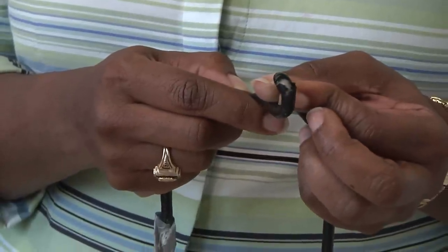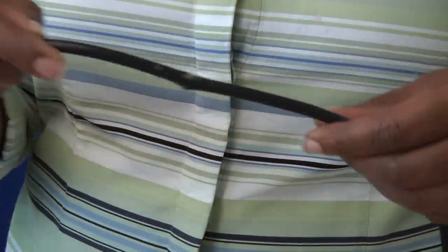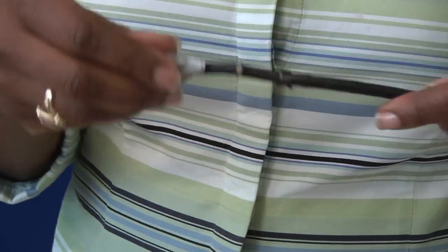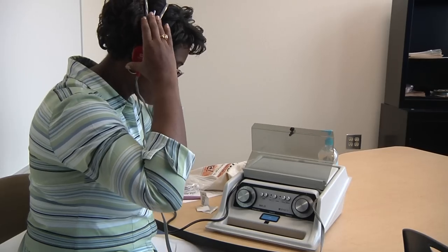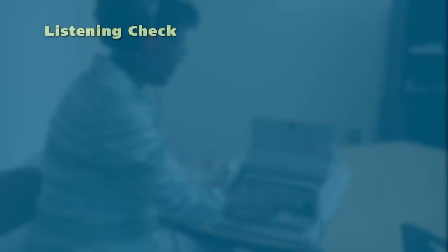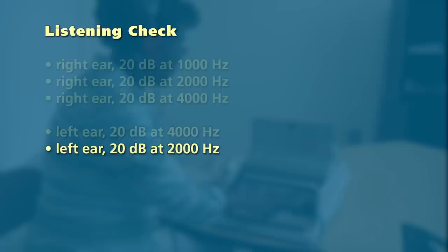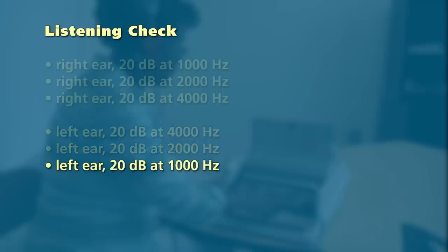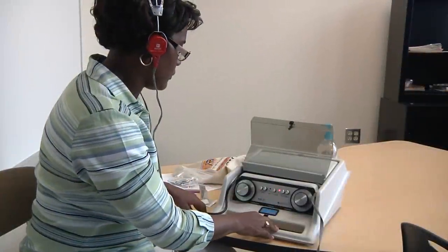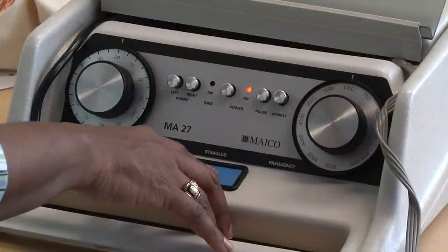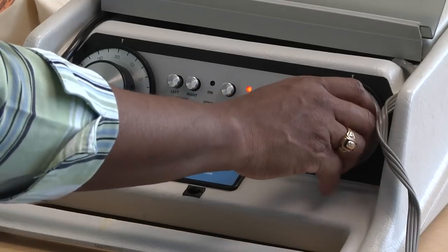Perform a listening and visual check every time the equipment is turned on. Inspect the cords and headset for any visible damage and be sure they are correctly connected to the audiometer; frayed cords should not be used. Put the headset on and check your own hearing at 20 dB at 1,000 Hz in the right ear, then check 2,000 Hz and 4,000 Hz, also at 20 dB. Then check the left ear, starting at 4,000 Hz, then 2,000 Hz, and finally 1,000 Hz, keeping the intensity level at 20 dB. If you have normal hearing and cannot hear all of the tones, either the equipment is not working or the background noise level is too high. Retest the equipment in a quieter room to determine if the problem is with the equipment or with the noise.